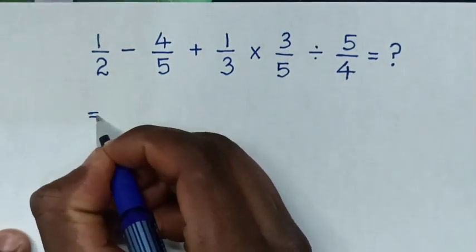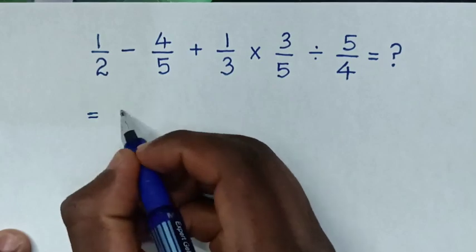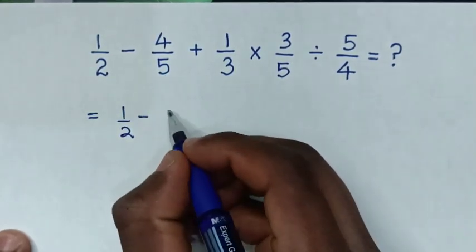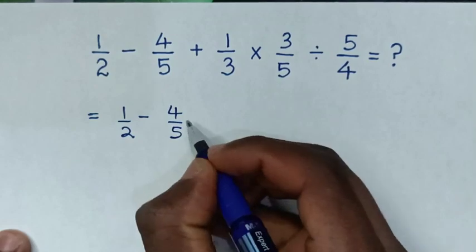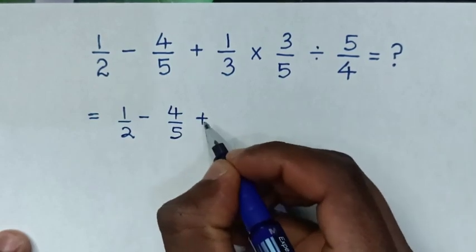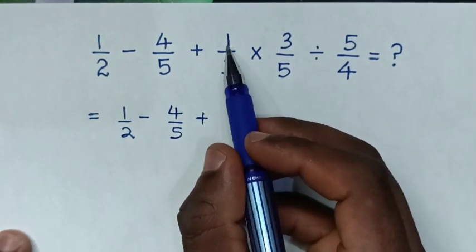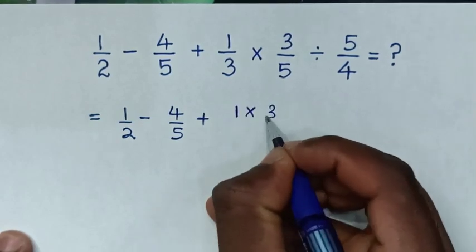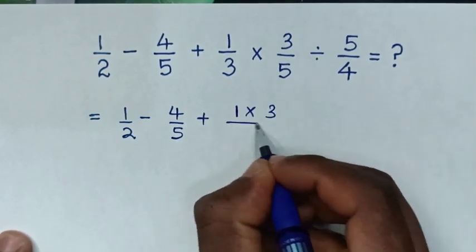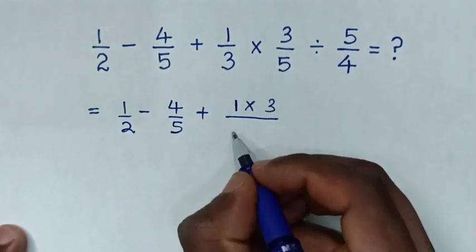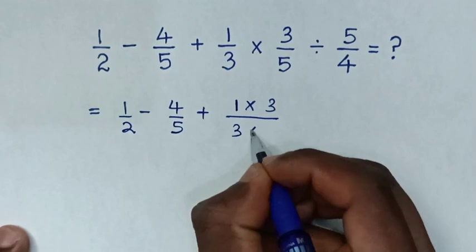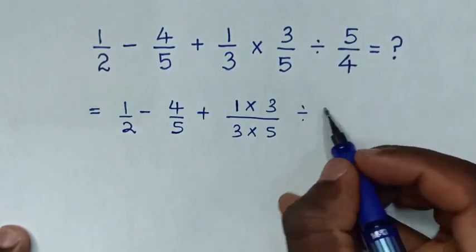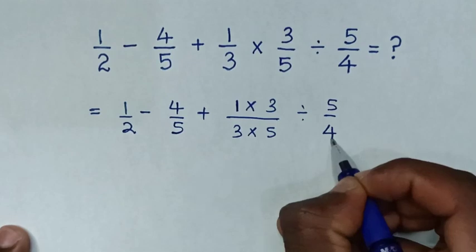Then it will be equal to 1 over 2, then minus 4 over 5, then plus — and here I'll do this multiplication — 1 times 3, then over 3 times 5, then divide by 5 over 4.